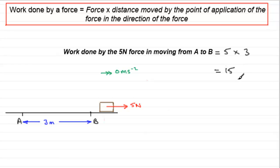But what are the units as well? Well, we've got force which is measured in newtons and distance which is measured in metres. So that's 15 newton metres. Now you don't often see these units written. One newton metre is defined as being equivalent to one joule, or J for short, 15 joules. So this would be the work done by this five newton force in moving from A to B.